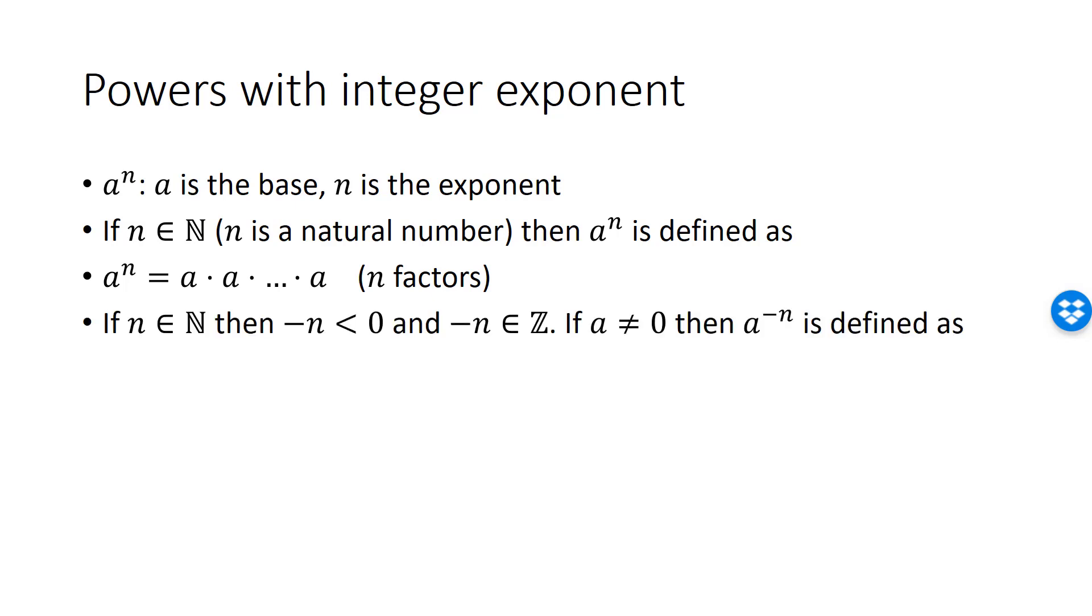We can extend the definition of exponentiation to the case when the exponent is a negative integer. If n is a natural number, then its additive inverse minus n must be a negative integer. In this case, if a is not 0,